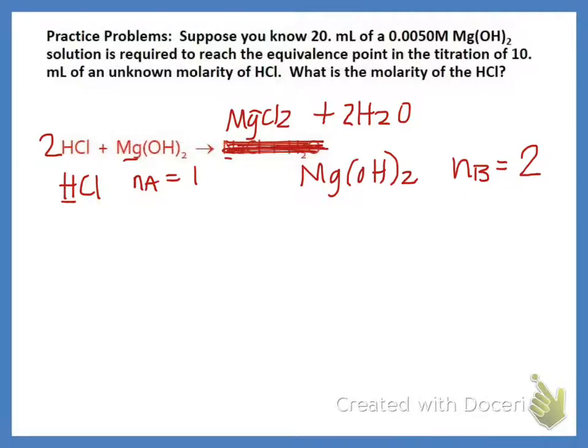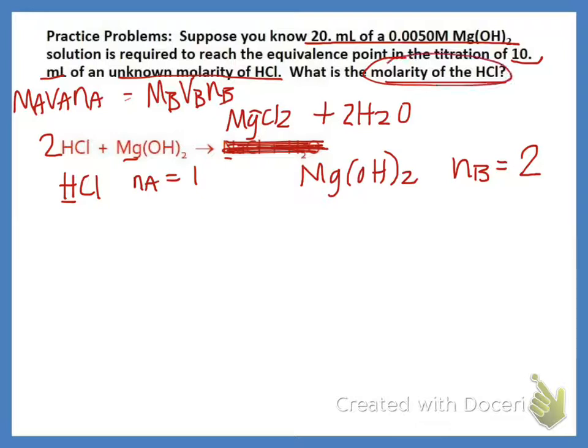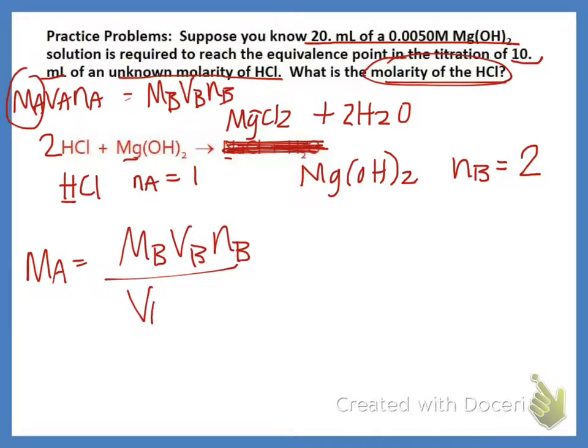So now we can work our problem using our MA, VA, NA equal to MB, VB, NB. So we have 20 mL of magnesium hydroxide at that concentration, and we titrate it, and we see that it took 10 mL of our unknown acid. And we want to solve for the molarity of the acid, so that's what we're going to be looking for. So we're going to be solving for MA. So we're going to rearrange, and we're going to say MB, VB, NB, over VA, NA.